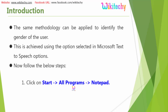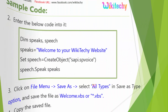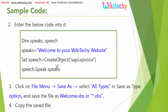I am going to open Notepad — Start, Programs, and Notepad. Just type this code. I have two variables: Speaks and Speech. Speaks holds the text which we are going to hear, for example, 'Welcome to your WikiTeki website.' Here is an API — an Application Program Interface or library — to create a voice.